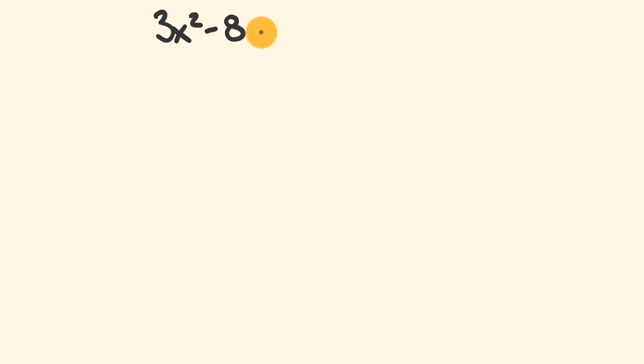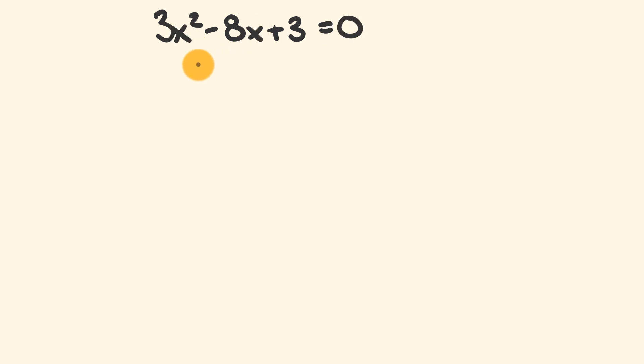Say we were trying to solve the following question: 3x squared minus 8x plus 3 is equal to 0. What we're trying to do is work out what the value of x is. As you're going to see straight away, for the x squared, we have a coefficient that is not equal to 1.